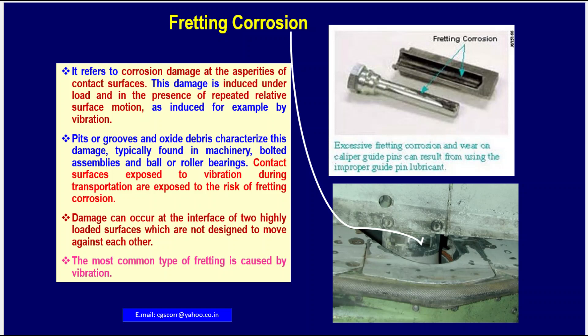Contact surfaces exposed to vibration during transportation are exposed to the risk of fretting corrosion. Damage can occur at the interface of two highly loaded surfaces which are not designed to move against each other. The most common type of fretting is caused by vibration.